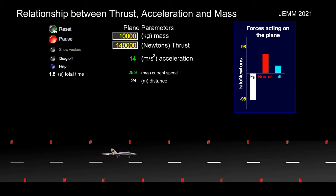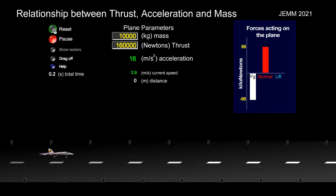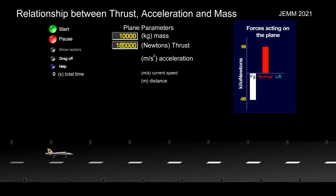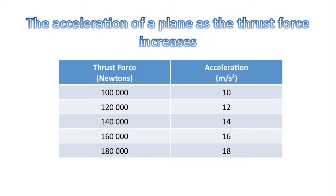You can almost guess that for 160,000 newtons of thrust, the acceleration is 16. There does seem to be some sort of connection between these numbers. And finally, for good measure, 180,000 newtons of thrust gives 18 meters per second per second. So here's our data table.